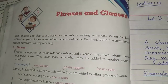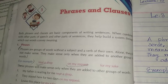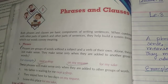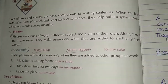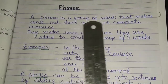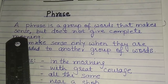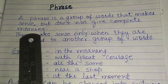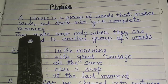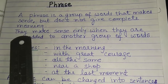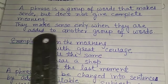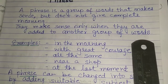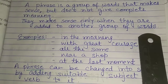Friends, today I am going to teach the next lesson of your language book, and that is lesson 3: phrases and clauses. Now come to the word phrase. A phrase is a group of words that makes sense but does not give complete meaning. It is a group of words which makes sense but not the complete meaning — without a verb or anything. They make sense only when they are added to another group of words. To make a proper sentence from a phrase, we have to add some other words also.